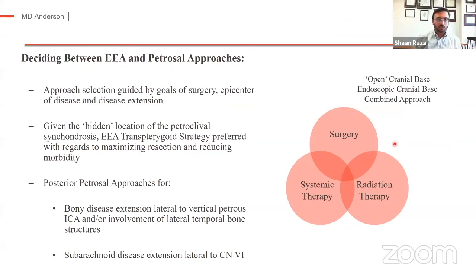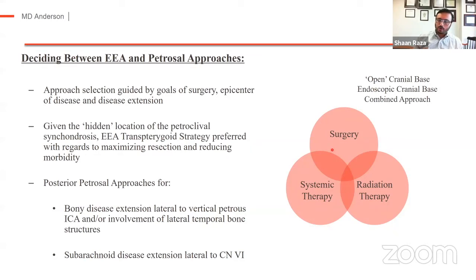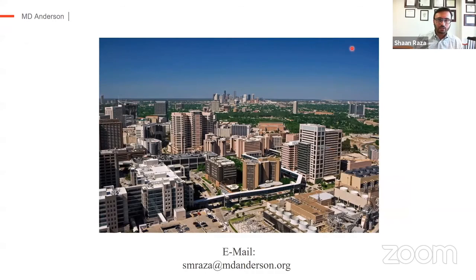To wrap up, in deciding between an endoscopic and a posterior petrosal or combined petrosal approach, understanding the disease and the goals of surgery are critical. Each tumor has its own particular pattern of extension and relationship to the nerves and neurovascular structures. For most of the bony tumors in this area, I tend to prefer an endoscopic transteregoid approach, recognizing the morbidity of conductive hearing loss, but also recognizing there's a clear role for open approaches for particular patterns of tumor extension and subarachnoid extension. Having both open and endoscopic approaches and being able to combine them can help redefine expectations for surgery for seemingly difficult tumors. Thank you very much for including me in this session.